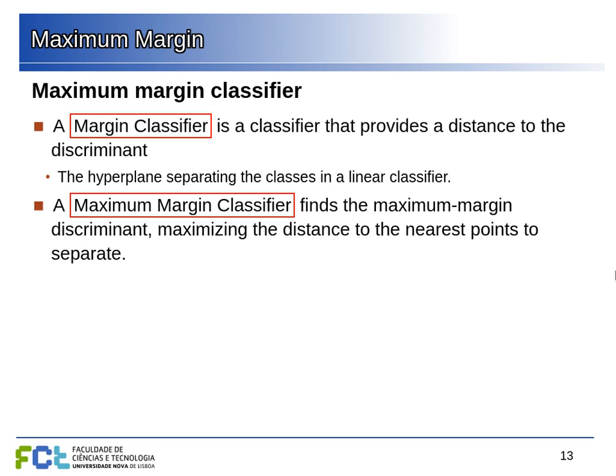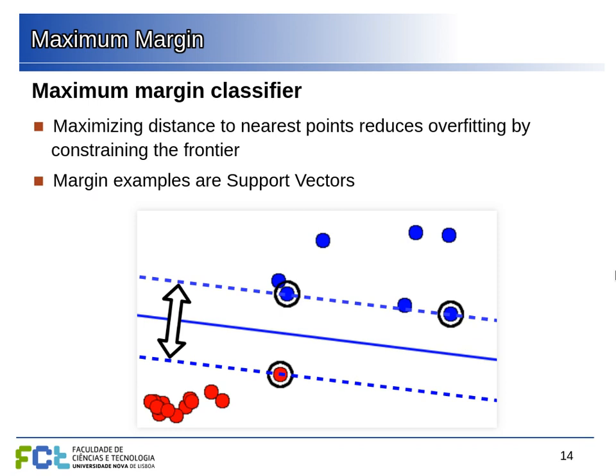We're going to create a classifier that tries to place the discriminant as far as possible from those points that are close to the frontier, because those are the points that matter. This gives us the notion of support vectors: the support vectors are those examples in our training set that determine where the discriminant must be. The other examples, away from the frontier, are irrelevant — only the closest points to the frontier determine where we need to place the discriminant.